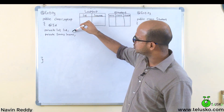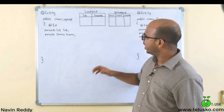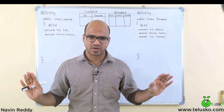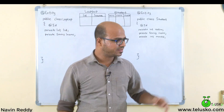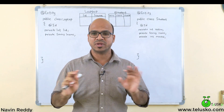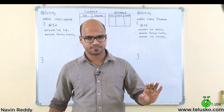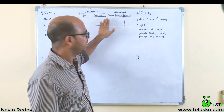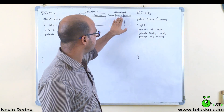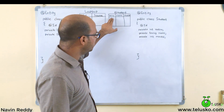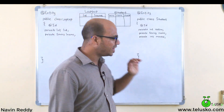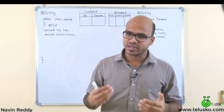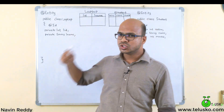We have two examples: a class Laptop with fields LID and LNAME, and a Student class with roll number, name, and marks. Both are annotated with @Entity, so we'll get two separate tables — one for Laptop with LID and LNAME, and one for Student with roll number, name, and marks. Roll number and LID are the respective primary keys.